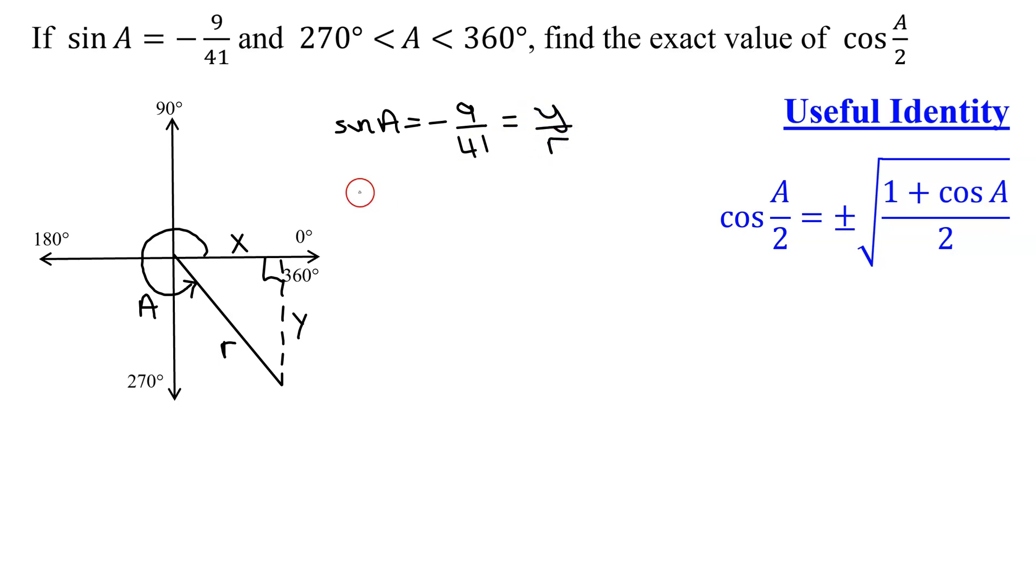I know that the sine of angle A equals negative 9 divided by 41. Remember, the sine function in terms of X, Y, and R is Y over R. Well, R is always positive, so R is positive 41. Y therefore has to be negative 9. And does that look correct in quadrant 4? Yes, Y has to be negative in quadrant 4.